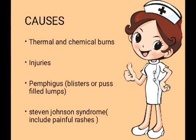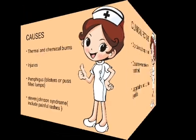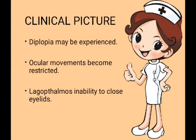Next is the clinical picture. Diplopia may be experienced — that means double vision; the patient feels everything is looking double. Ocular movements become restricted, which means the patient is not able to see comfortably in different directions like to the left side, right side, upper side, and down side — so these movements become restricted.